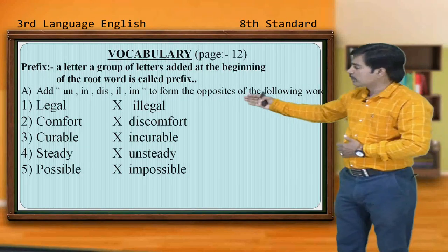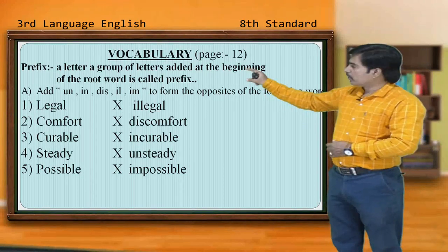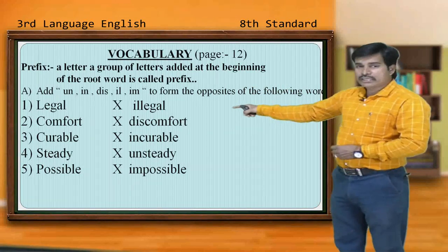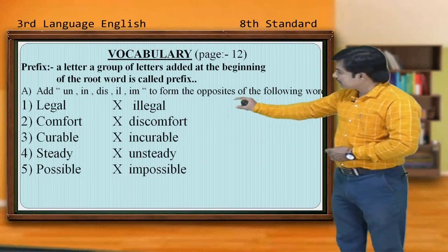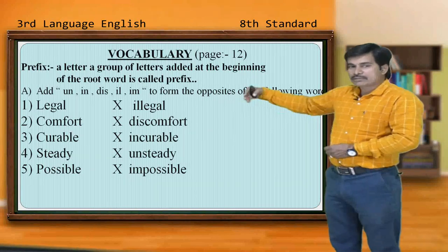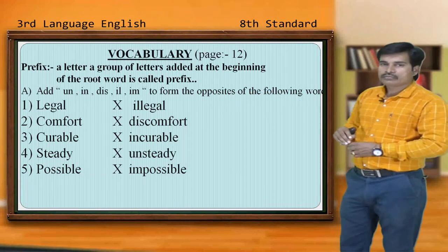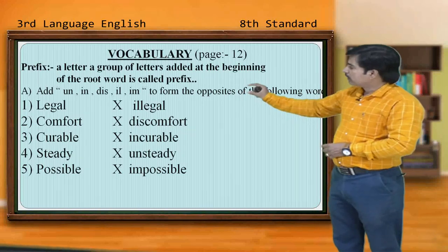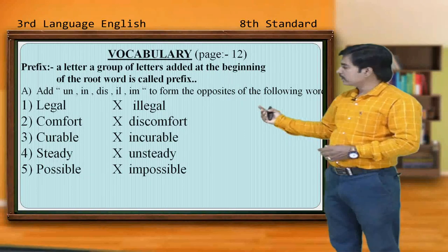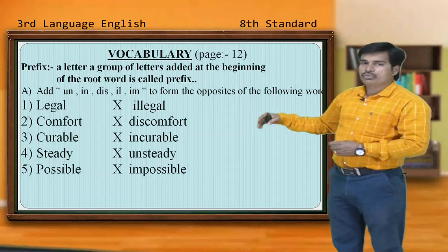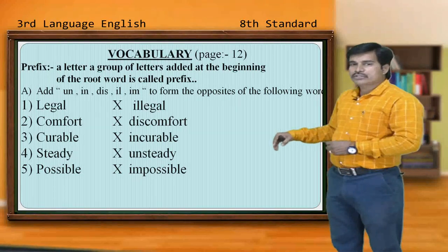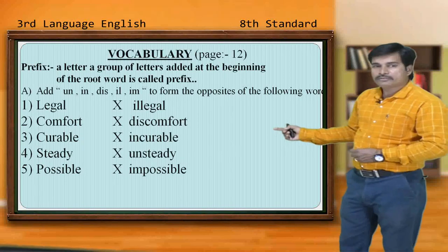Are you able to follow the answers? The second one is 'comfort' — comfort is the root word. We have added 'dis' to the root word, so it has become 'discomfort.' 'Dis' is added at the beginning of the root word. The third one is 'curable' — curable is the root word. We have added 'in' at the beginning of the root word, so it is called 'incurable.'